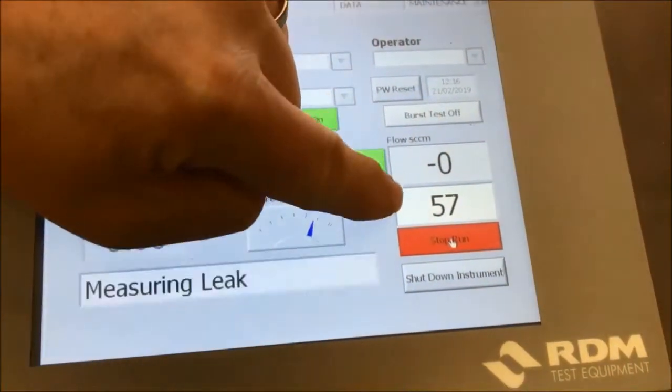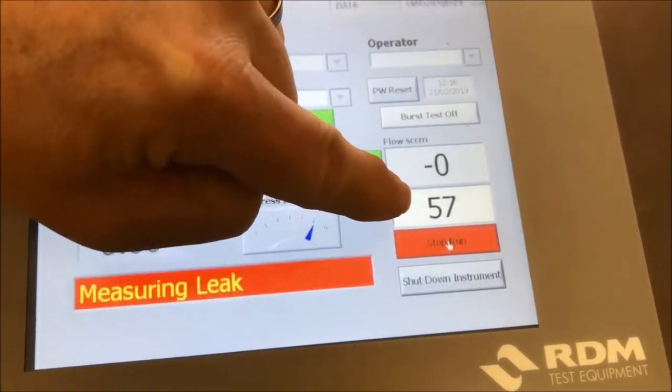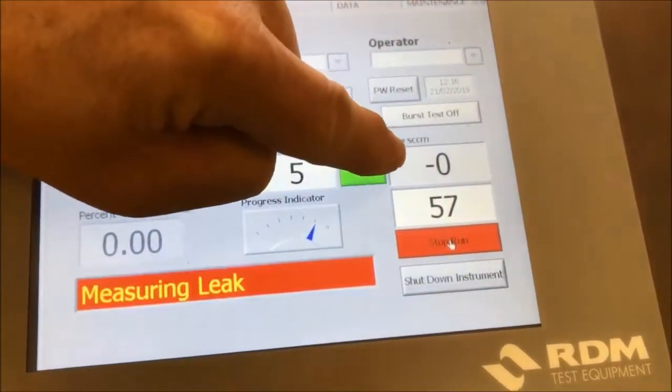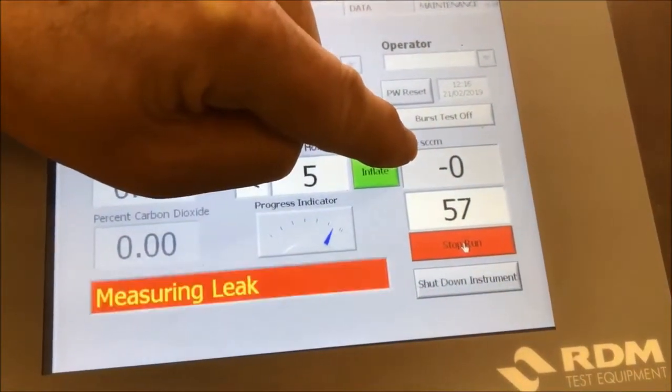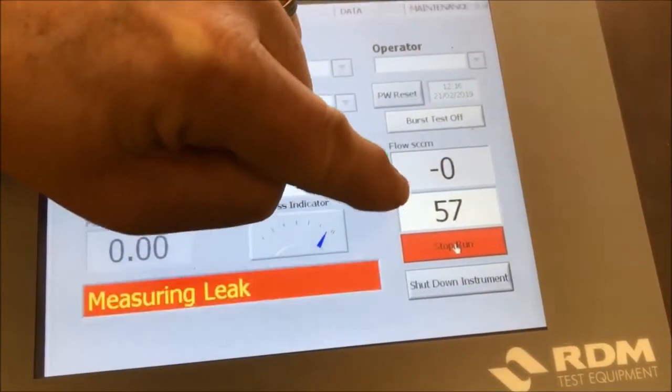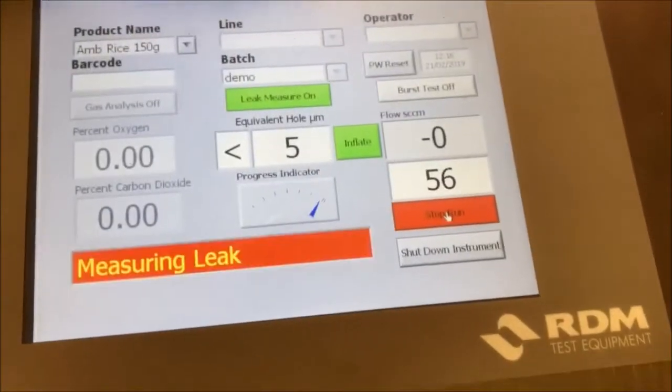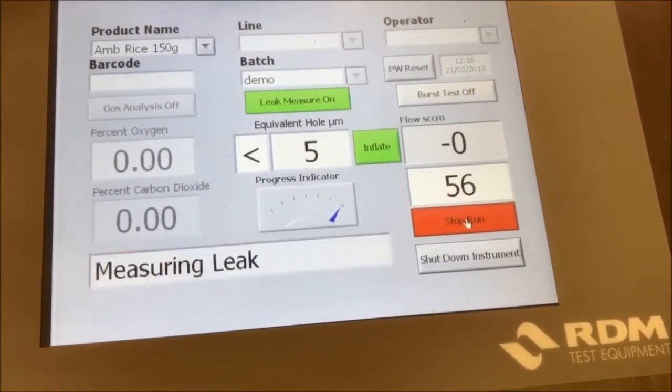These are the numbers, by the way. This is the pressure in millibars that we are holding that pack at, and this is the flow in SCCM that we're having to put into the pack to maintain this pressure. As you can see, it's zero, so the pack is holding pressure perfectly.